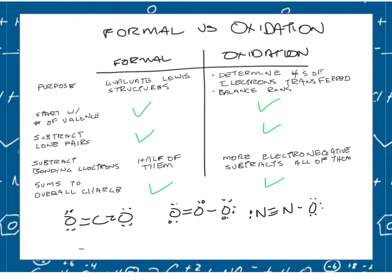Oxidation numbers are very, very similar to formal charge. I made a product comparison checklist to show how much is the same — like the free app versus the paid app. They have slightly different purposes. We looked at formal charges to evaluate Lewis structures and find which one is best because it has the lowest number of formal charges, possibly even zero. When calculating these, you start off with the number of valence electrons — that's true for both. You subtract from an atom the number of lone pairs it has — that's also true for both.